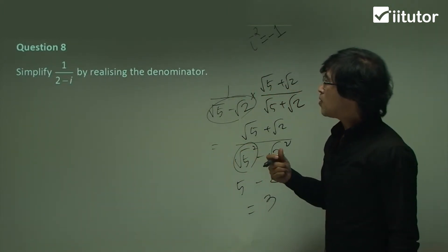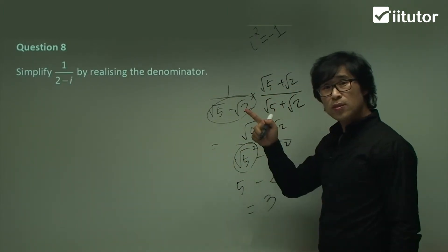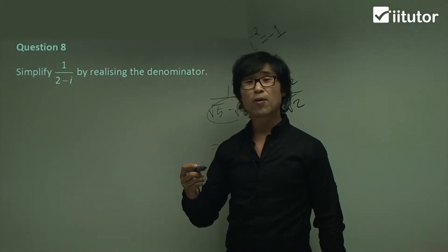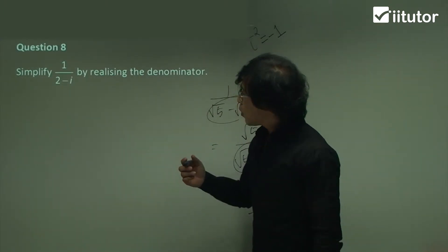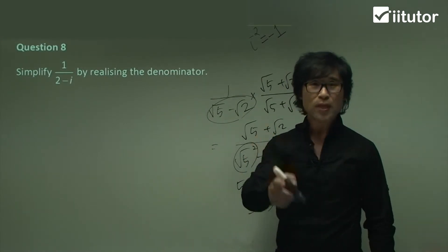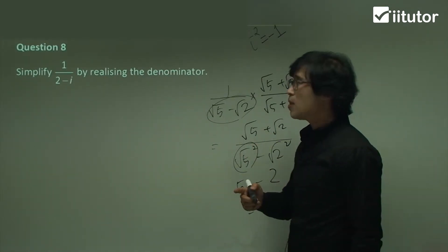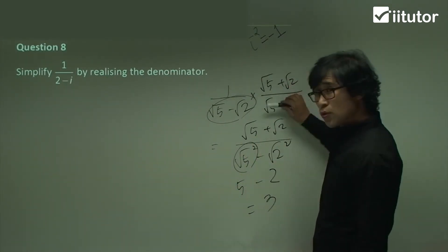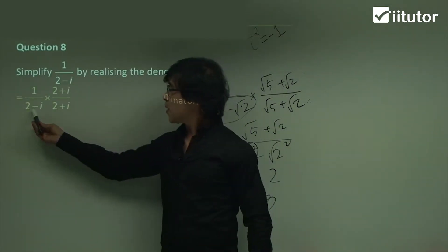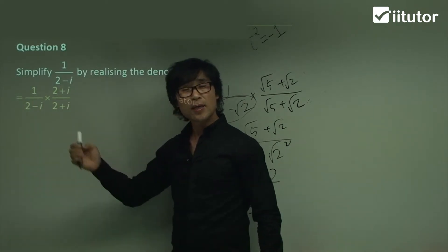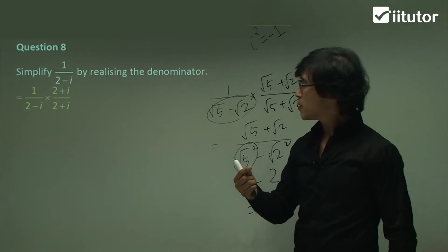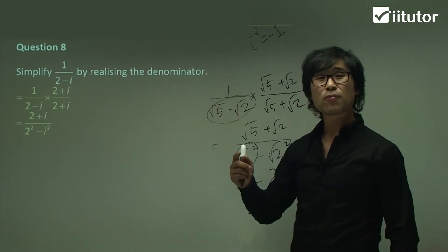Question 8. Simplify. This is the one. We have to use the conjugate pair of the complex number field. So what is the conjugate pair of 2 minus i? It is 2 plus i. So multiply the same conjugate up and down. Easy. Then, a minus b and a plus b. So it's like the difference of the square numbers. So how do you expand it? So a squared minus b squared.